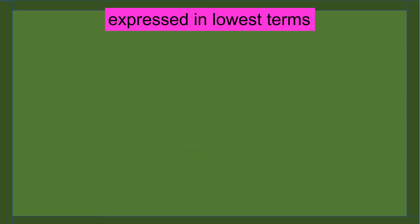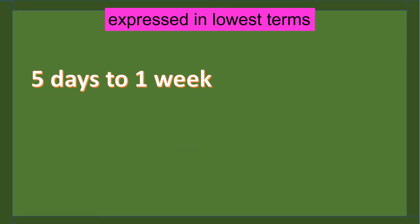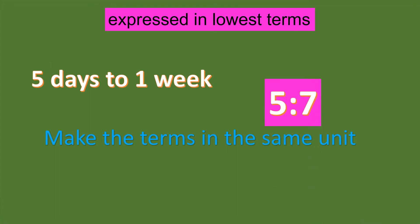Another example: 5 days to 1 week. Here we need to make the terms in the same unit. Convert 1 week to days — we know that there are 7 days in 1 week. So, the ratio becomes 5 is to 7.